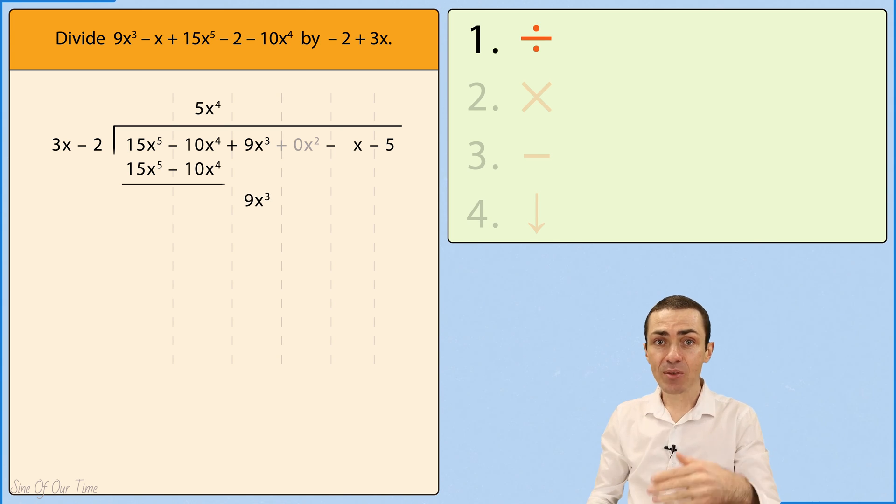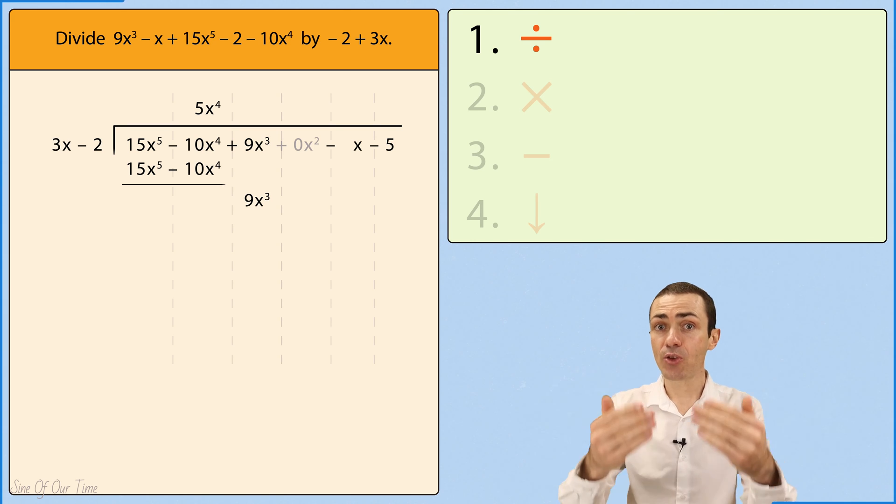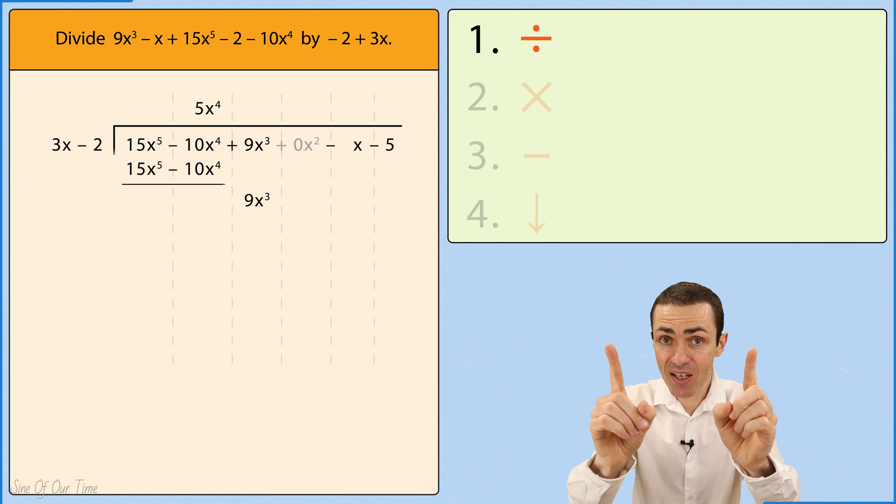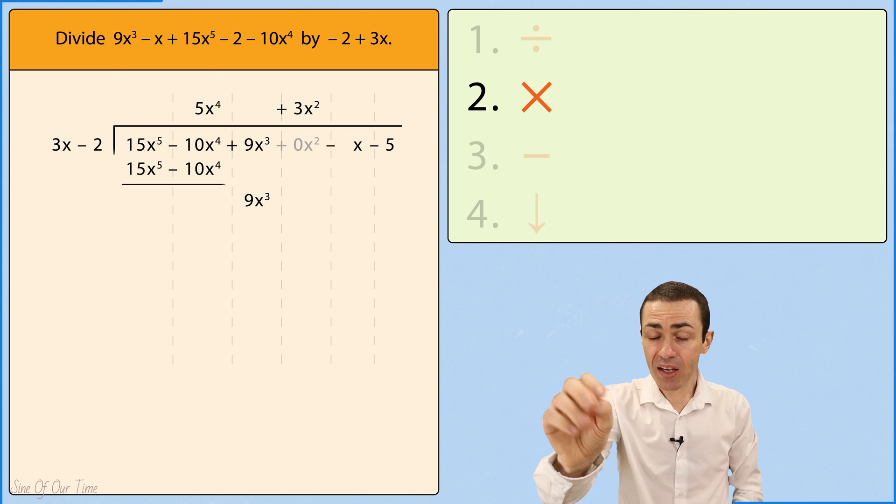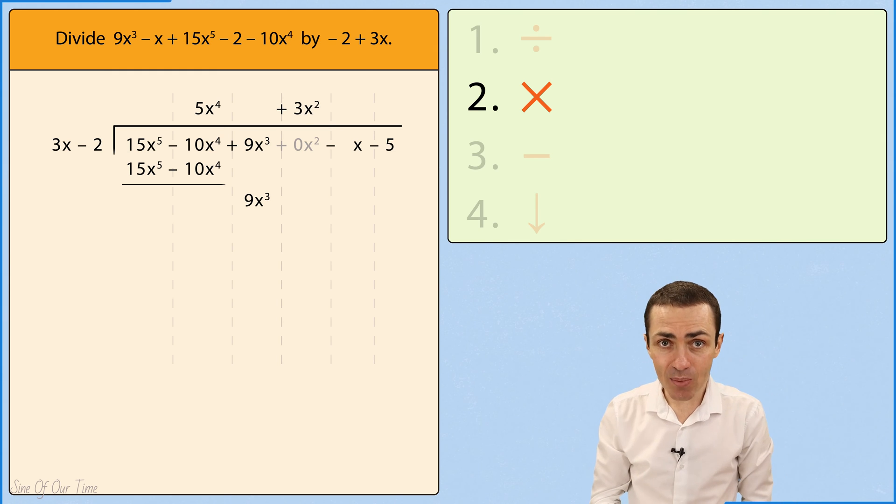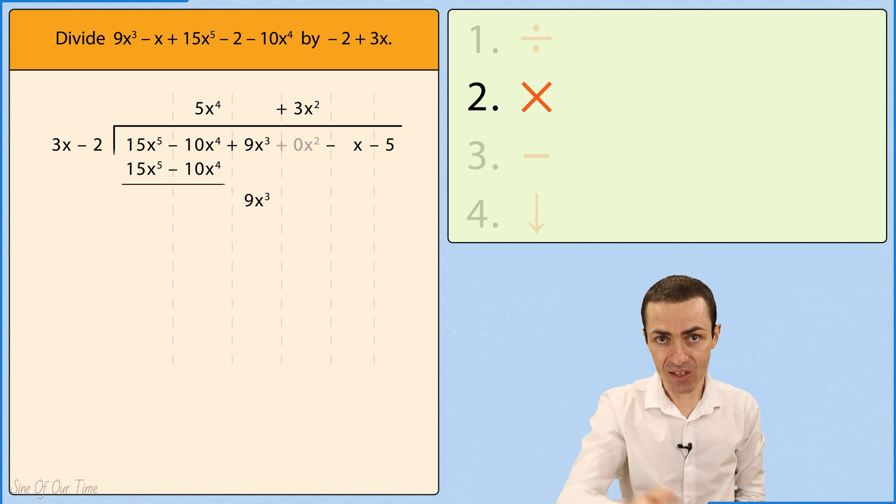9x cubed divided by 3x gives us 3x squared, but we must be careful and put that 3x squared in the column reserved for x squareds. We then take that 3x squared and multiply by 3x minus 2 in order to give us 9x cubed minus 6x squared.